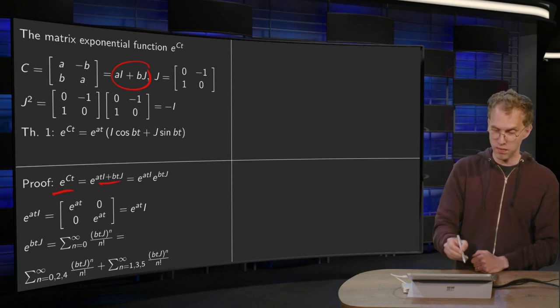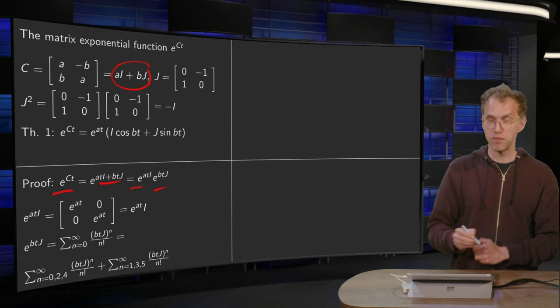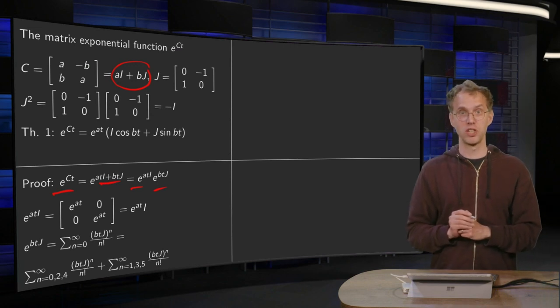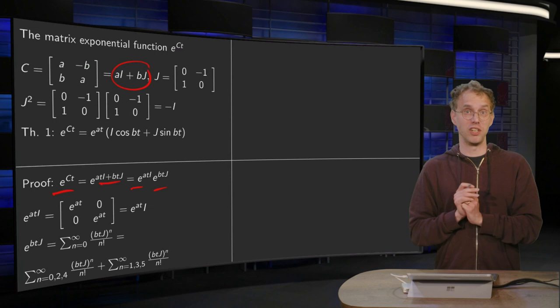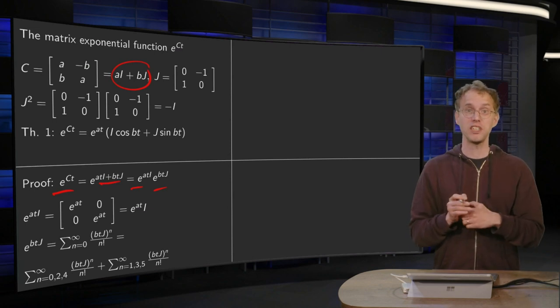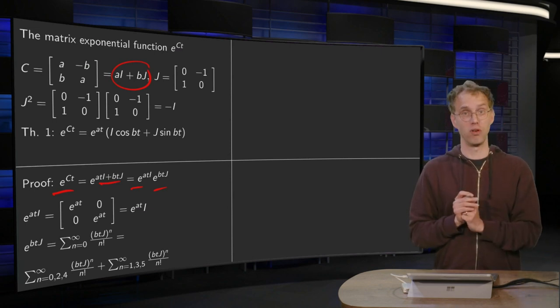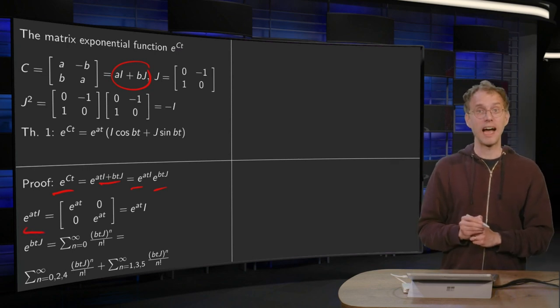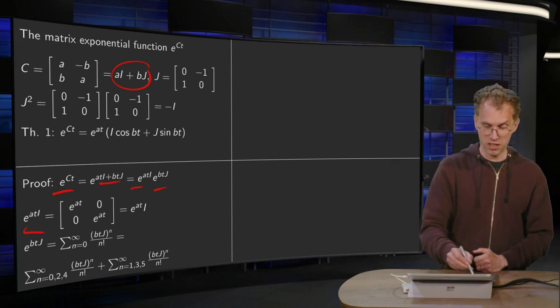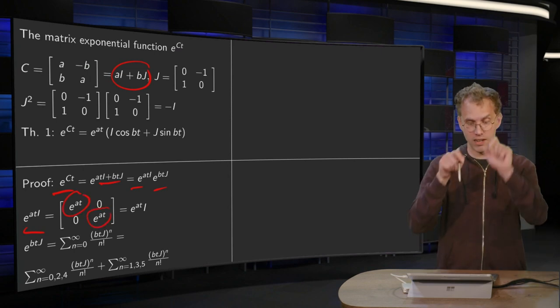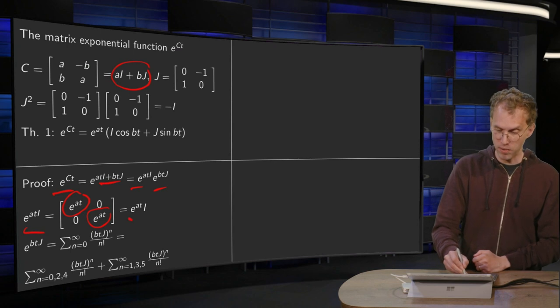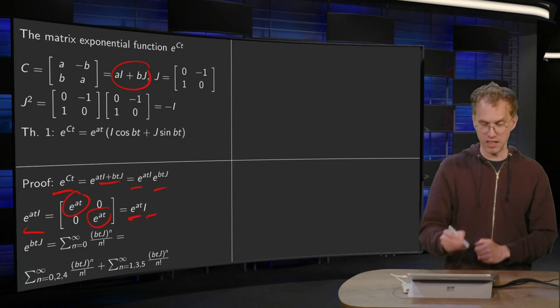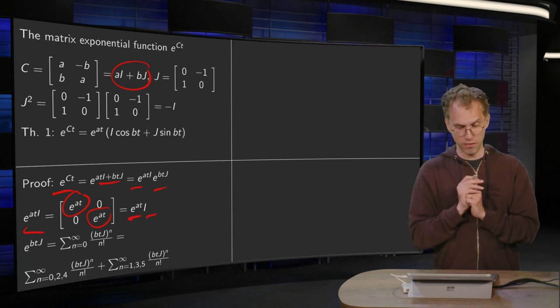Now the first matrix exponential is easy because we have a diagonal matrix. We have already seen before how that is done. E to the power at times the identity matrix is just an identity matrix with e to the power at on its diagonal. So e to the power at times identity matrix. That's the first part.